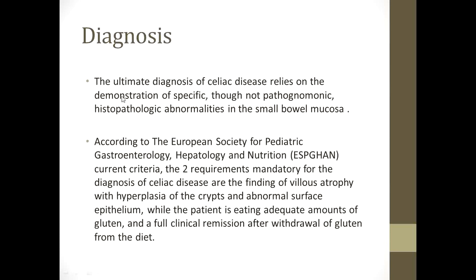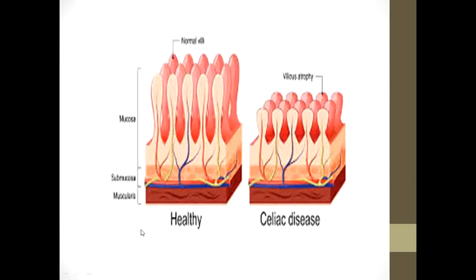The ultimate diagnosis of celiac disease lies on the demonstration of specific, though not pathognomonic, histopathological abnormalities in the small bowel mucosa. According to current criteria, two requirements are mandatory: the finding of villous atrophy with hyperplasia of the crypts and abnormal surface epithelium while the patient is eating adequate amounts of gluten, and a full clinical remission after withdrawal of gluten from the diet.